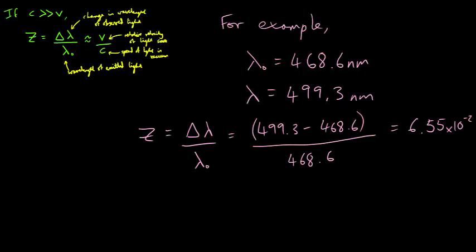Notice there is no unit for redshift. It is a ratio. So to determine V, that is the recessional velocity, we multiply the redshift, 6.55 times 10 to the minus 2, by the speed of light in a vacuum, 3 times 10 to the 8, and that gives us a recessional speed of 1.97 times 10 to the power of 7 meters per second.